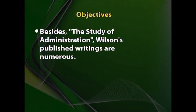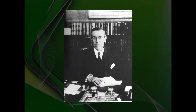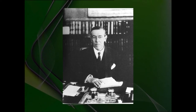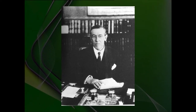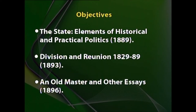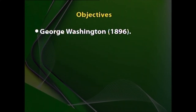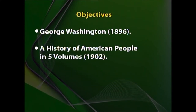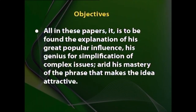Besides this, Wilson published numerous other writings. Among the most important are: Congressional Government, A Study in American Politics, The State, Elements of Historical and Practical Politics, Division and Reunion, An Old Master and Other Essays, On George Washington, and A History of American People in Five Volumes (1902). In all these papers is found the explanation of his great popular influence, his genius for simplification of complex issues, and his mastery of the phrase that makes the idea attractive.